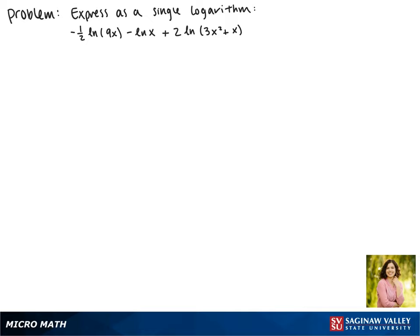Today we'll be simplifying the expression negative 1 half times the natural log of 9x minus the natural log of x plus 2 times the natural log of 3x squared plus x.